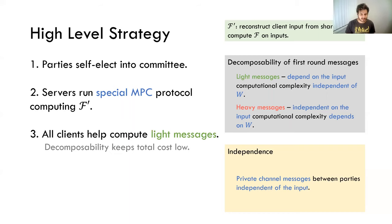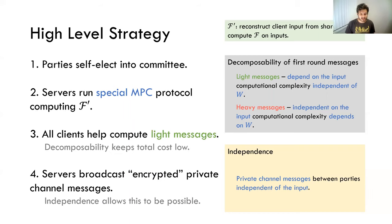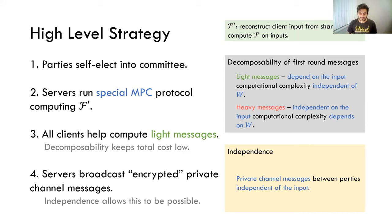What about the second challenge regarding private messages? To deal with this, servers broadcast encrypted versions of their private channel messages. In the first round, they can do this because of the independence property, which says that the private channel messages between parties are independent of the input. So they don't need to wait for input shares from clients before sending these private messages. It's going to be broadcast and encrypted, and we'll see shortly how to handle that.